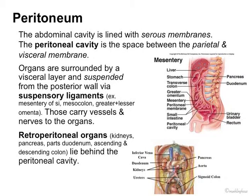The peritoneum is another topic. We talked about the serous membrane system quite extensively in the respiratory system. Inside the abdominal cavity, we also have a membrane — the peritoneum. We have a visceral and a parietal peritoneum. Organs are surrounded by the visceral layer and then suspended from the posterior wall via suspensory ligaments. This system is more complicated than the one in the lungs and heart. Here we have ligaments attached in the back wall that suspend those organs surrounded by the visceral peritoneum, because the gut is a lot of tubing, and this way we can organize where the gut lies.